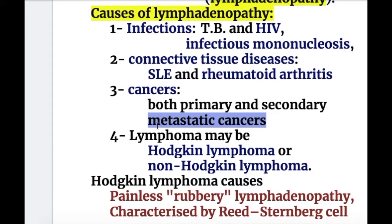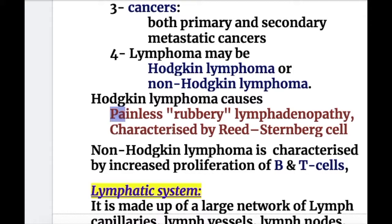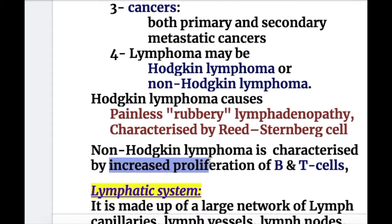Number four, lymphoma, which is also a form of cancer. There is Hodgkin's lymphoma and non-Hodgkin's lymphoma. Hodgkin's lymphoma causes painless, rubbery lymphadenopathy characterized by Reed-Sternberg cells. Non-Hodgkin's lymphoma is characterized by increased proliferation of B and T cells.